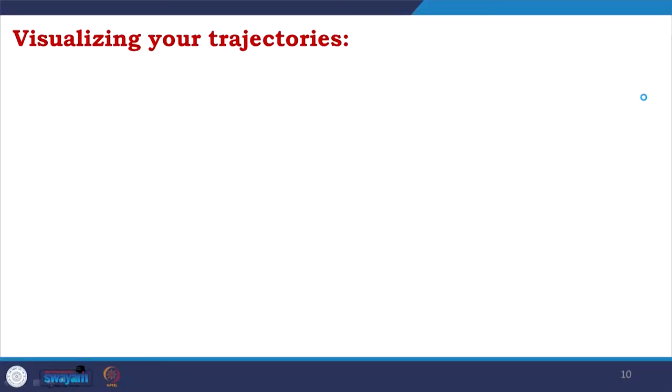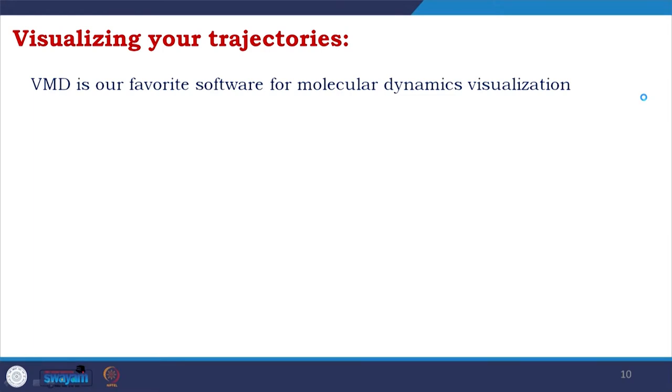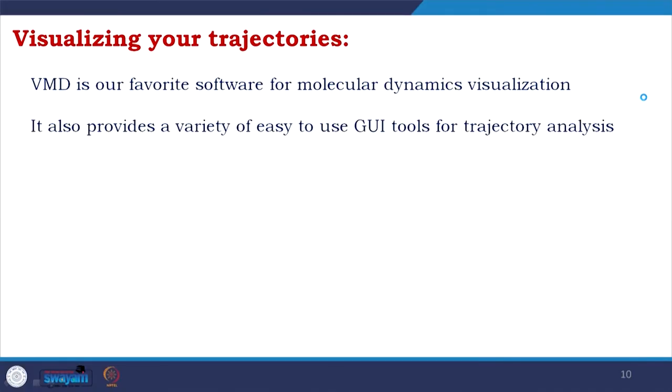As I told, you have a force field — you put a force on your sample and it goes up and down, creating a trajectory. VMD is our favorite software for molecular dynamics visualization. If you remember, I talked about visualization softwares — VMD is used for looking at proteins and many other purposes, but it was actually developed for molecular dynamics. That is why the name VMD comes from Visualizing Molecular Dynamics. It provides a variety of easy-to-use GUI tools for trajectory analysis.